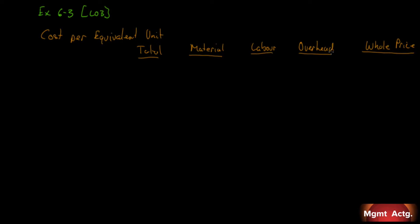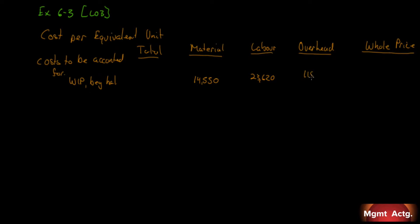We start pretty much the same way we start to account for the units. We say 'costs to be accounted for' — this is the cost we must account for. We must account for our work in process beginning balance. Looking at the information given, we have work in process for May. We're given the cost for materials, labor, and overhead but not a total: $14,550 for materials, $23,620 for labor, and $118,100 for overhead, giving us $156,270.